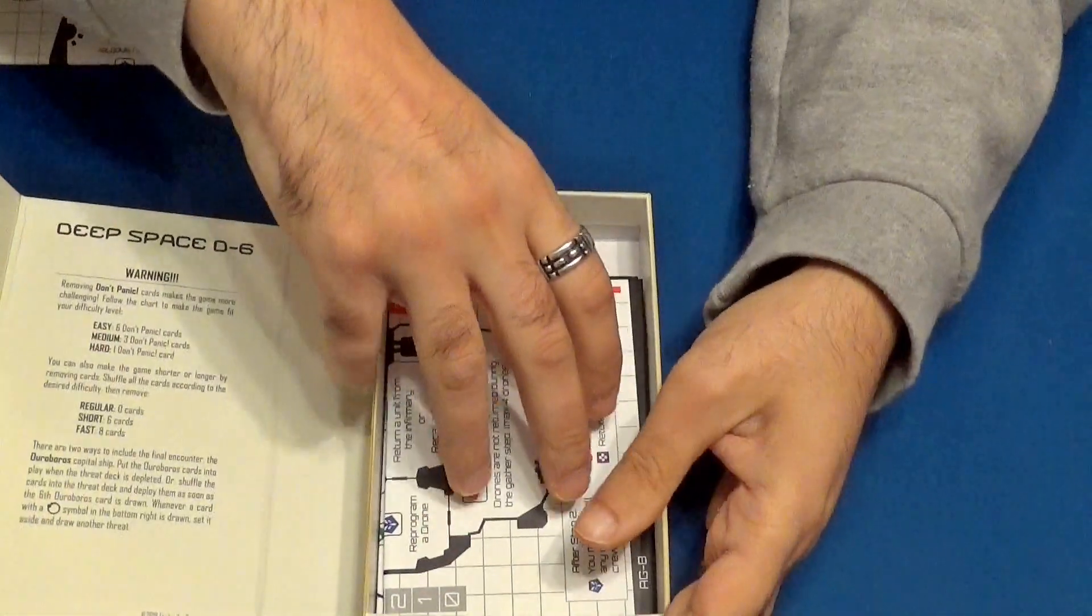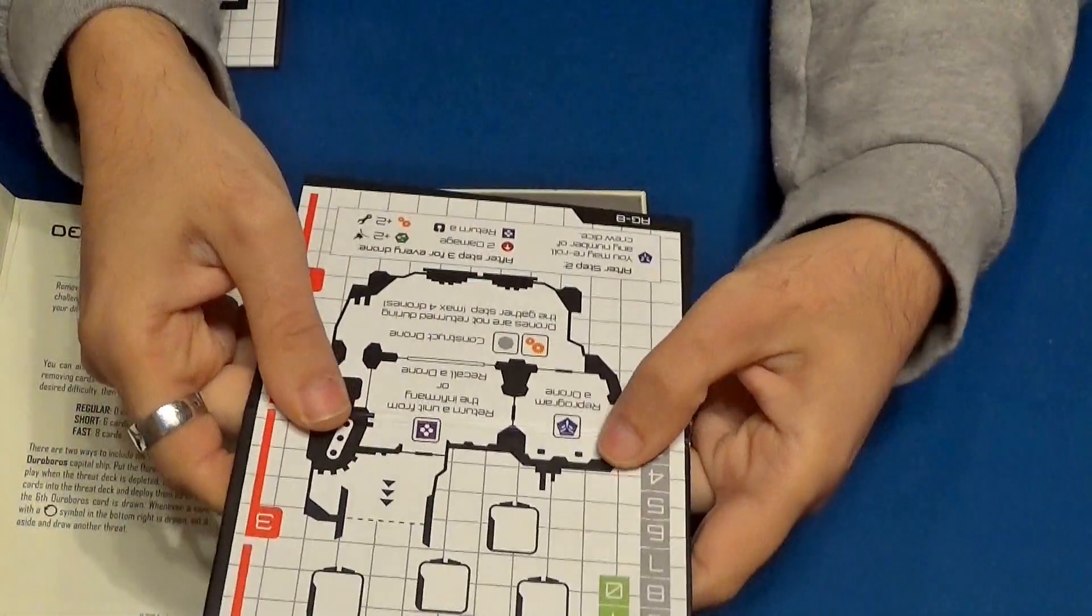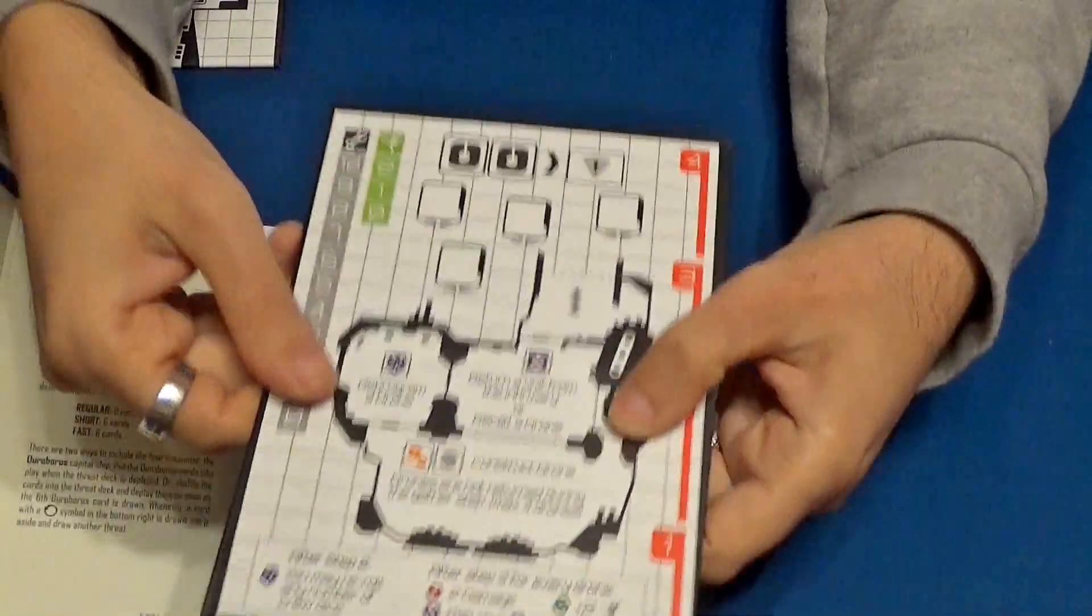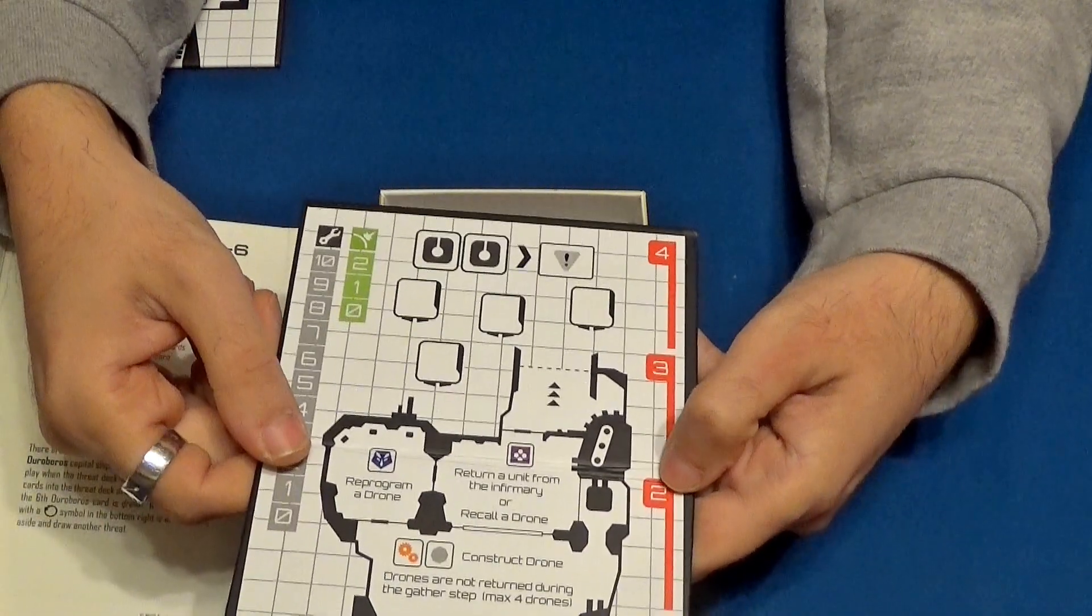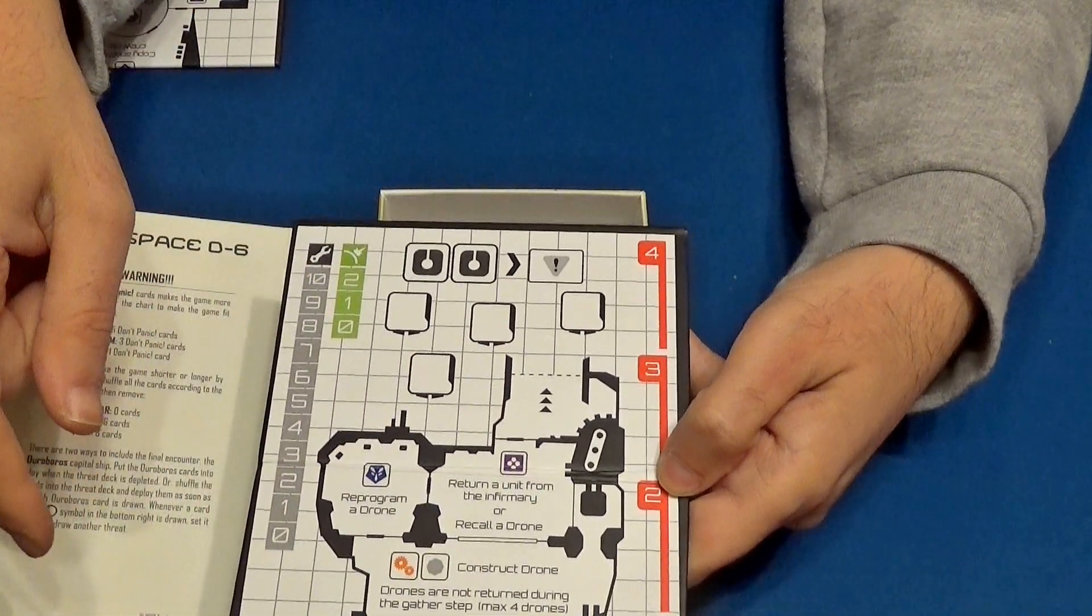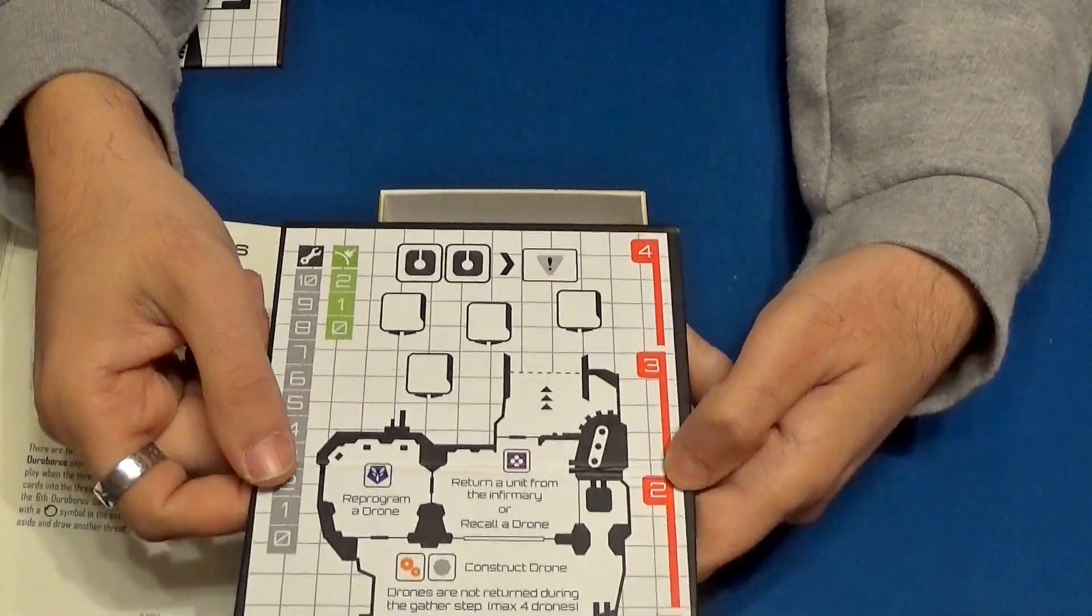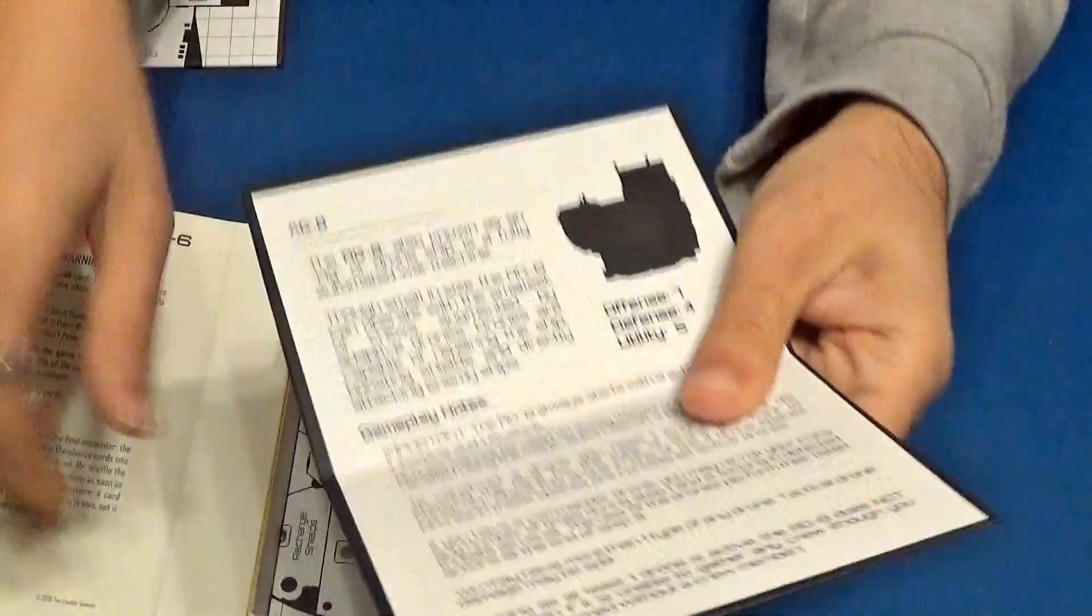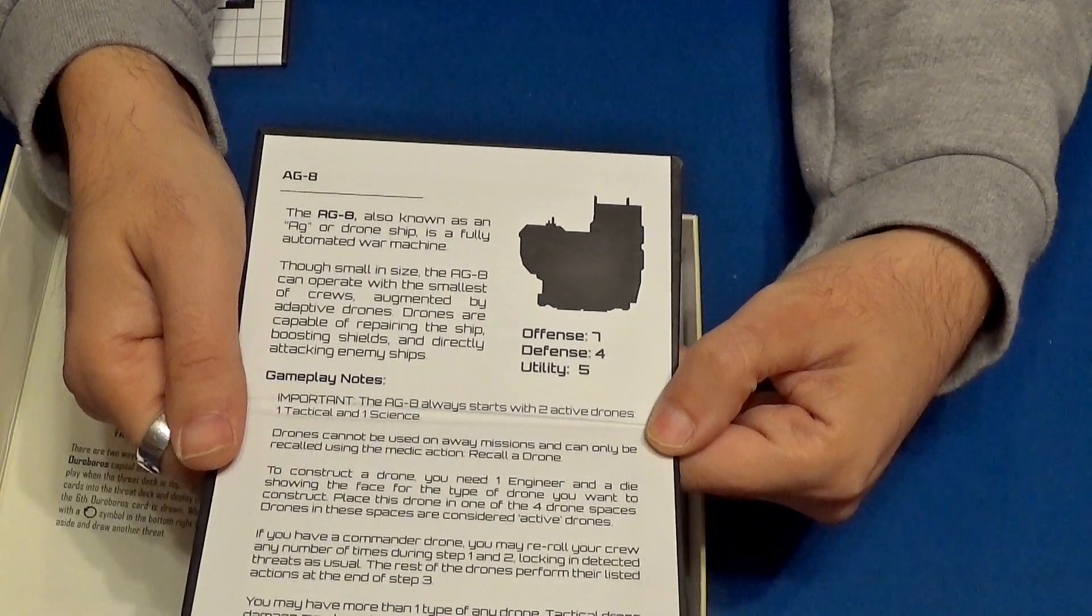Aquí tenemos otra. Con lo que cada partida, si jugamos con una nave u otra, la partida será un poco diferente. Aquí vemos que hay mucha carcasa y poco escudo, por ejemplo. Tenemos otros distintos sitios para poder estar. AG8 se llama la nave. Lo que vemos aquí. Aquí tenemos lo que es un resumen de la nave.